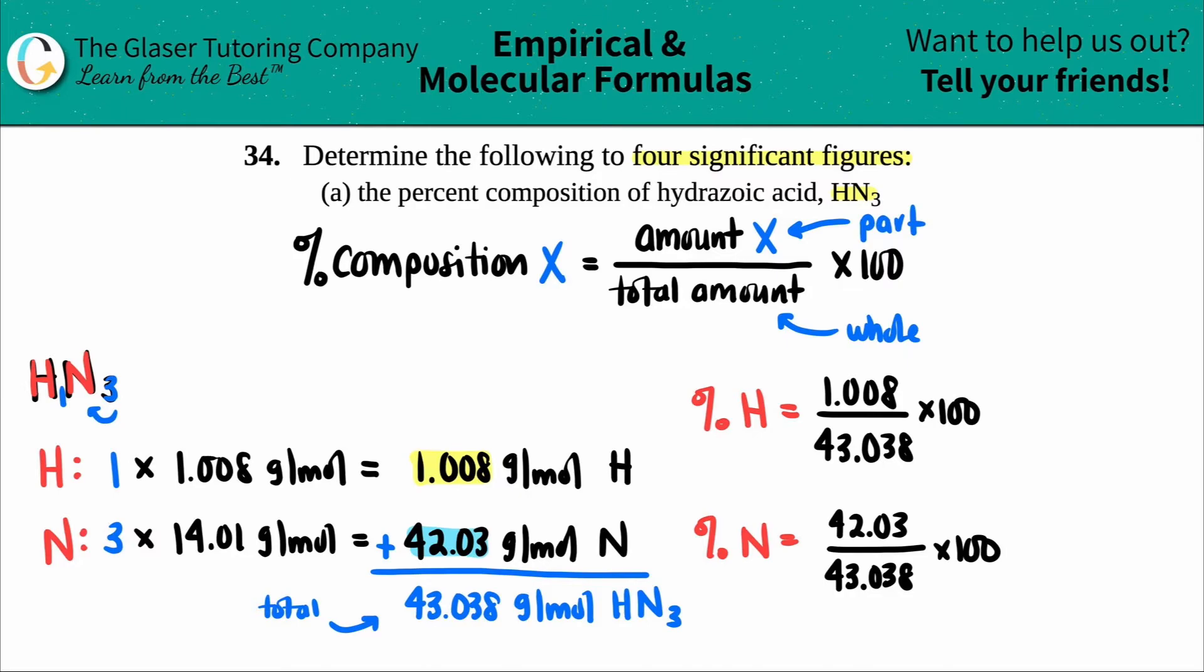So I just find out what the percent hydrogen is: 1.008 divided by 43.038. We need to round this to four sig figs. It says we need it to four significant figures. So it's going to be a very low number: 0.02342. I'm going to squeeze it on the bottom here, 0.02342. So not even 1% is of hydrogen in this compound.